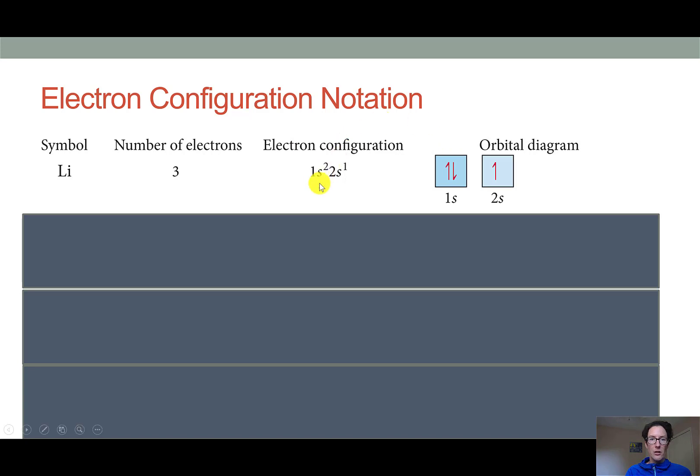In an electron configuration, we show the principal quantum number, the n value, as an integer. And then we show the quantum shape, or the shell, as the letter that describes its shape. And then the number of electrons held within that orbital, that 1s orbital, is given as a superscript. So we have two electrons in the 1s orbital, and then the third electron of this element has to go to the next higher energy state. So it is in the 2s orbital, and we just have one electron there. You can see this shown schematically in the orbital diagram.